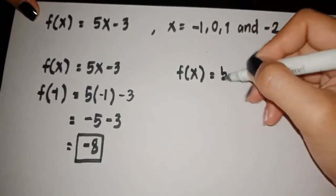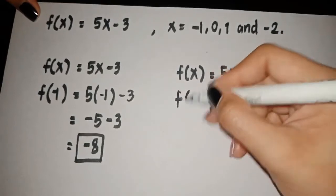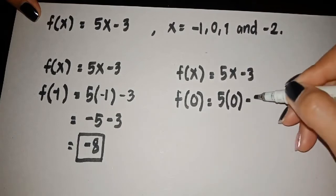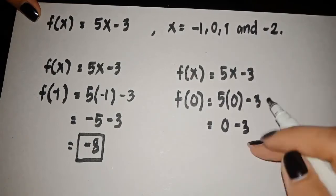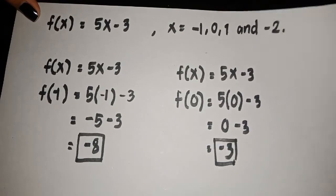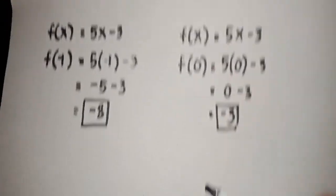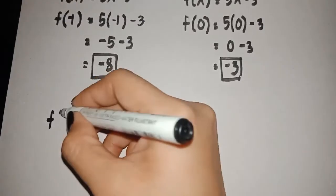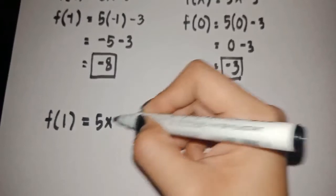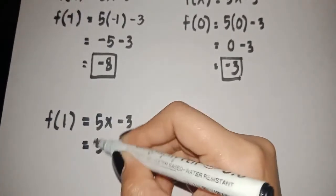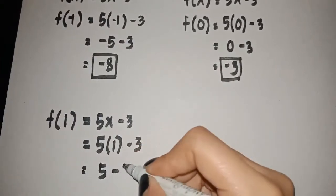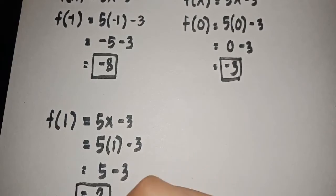For the next value of x = 0: f(0) = 5(0) − 3 = 0 − 3, so the final answer is −3. For x = 1: f(1) = 5(1) − 3 = 5 − 3, and the final answer is positive 2.